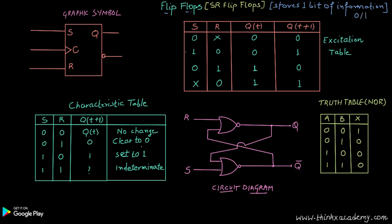Flip-flop does not store this information permanently — it stores it temporarily. This means it will store one bit of information only if the circuit is connected to electricity. If current is passing through the circuit, only then will the flip-flop store one bit of information. Storing one bit of information is also called maintaining a state of zero or one.